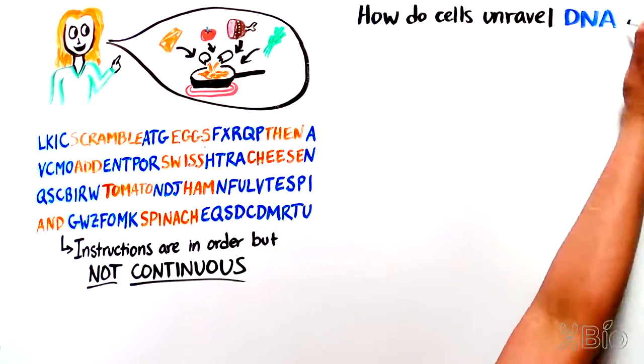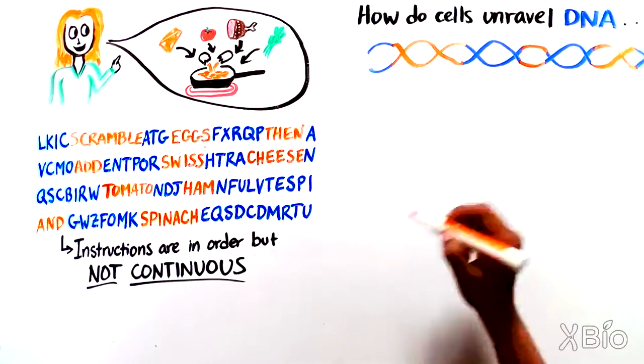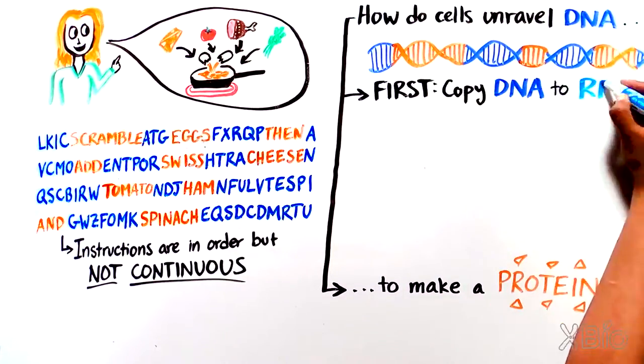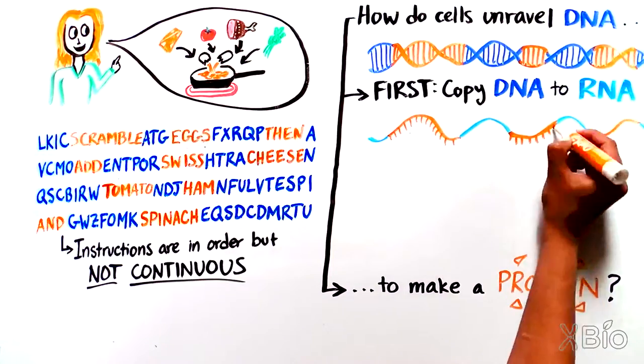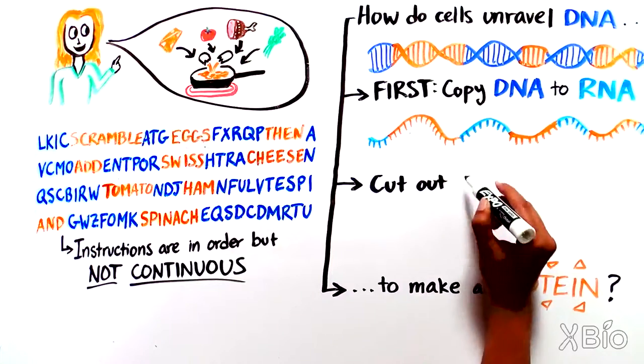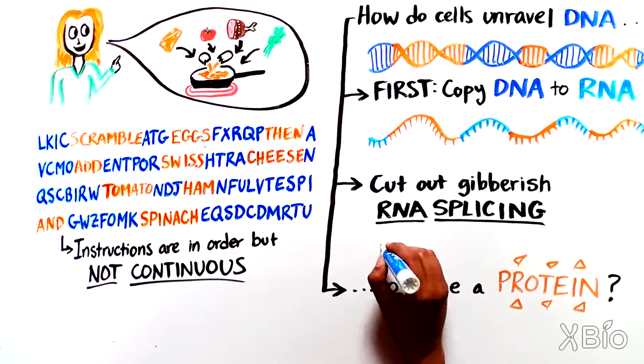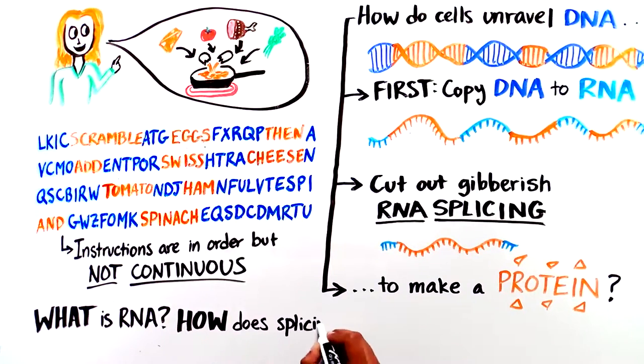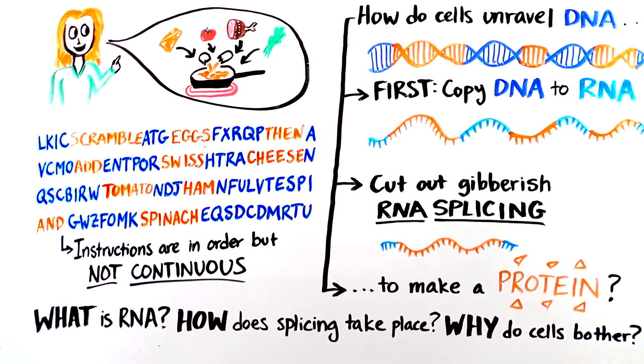But how do our cells unravel the confusing DNA instructions to make a protein? They do this by first copying the DNA into another type of nucleic acid called RNA, and then cutting the gibberish regions out of the RNA. This process is known as RNA splicing. Let's understand what an RNA is, how the process of splicing takes place, and why the cells bother storing and then cutting out all of the gibberish.